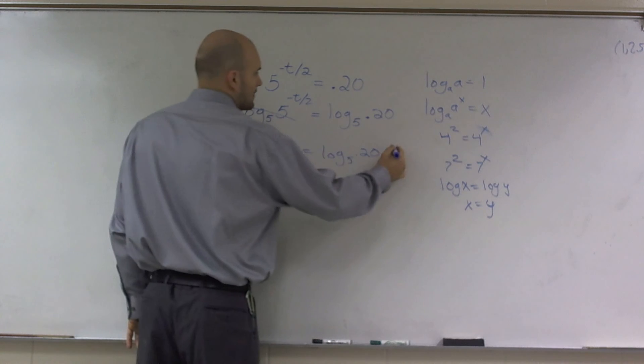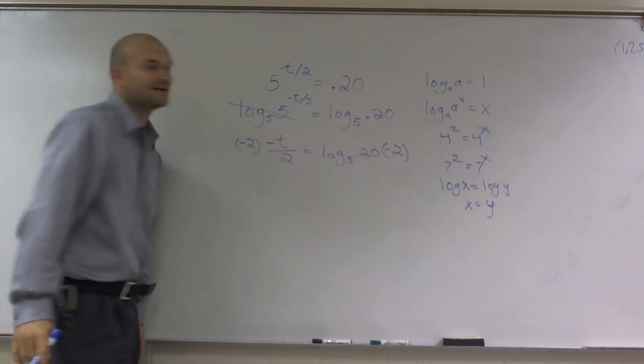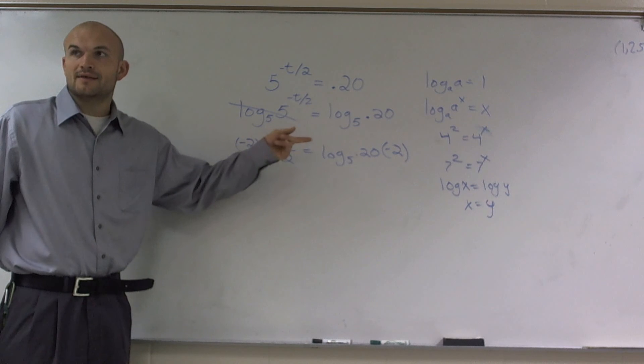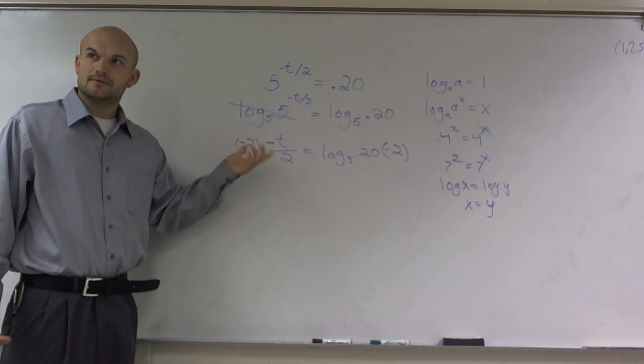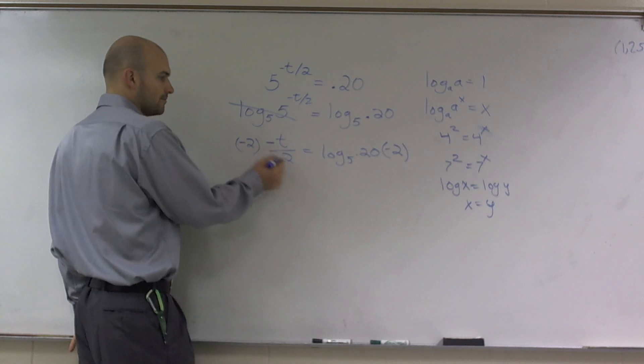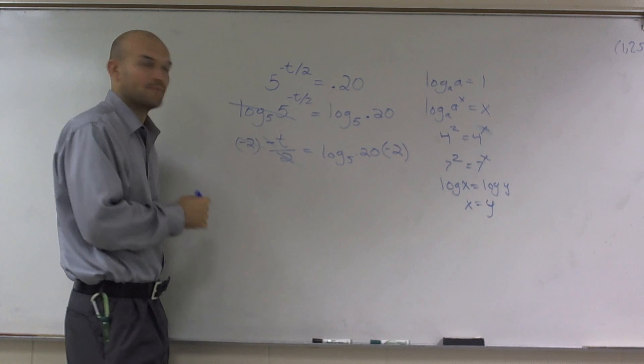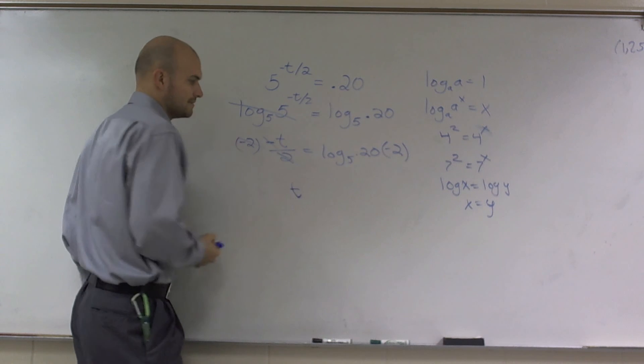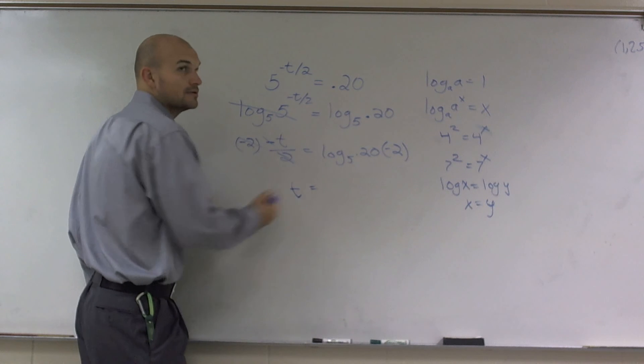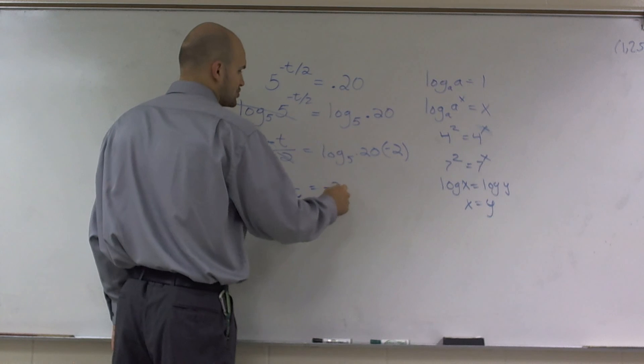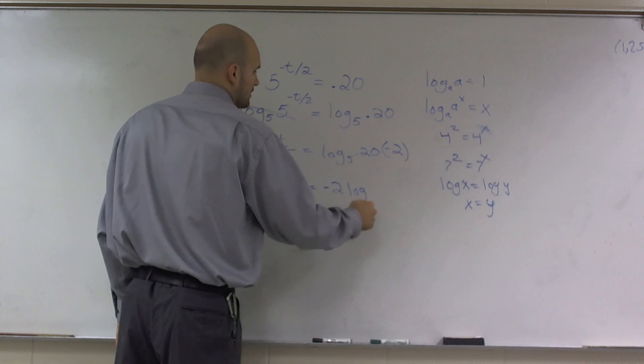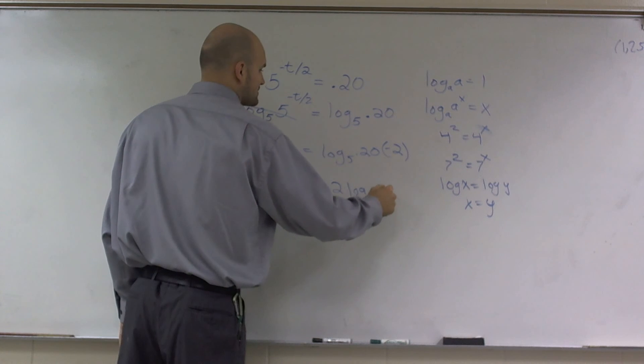Are you going to multiply by negative 2? Yep. I'm going to multiply by negative 2. You can multiply by 2 and then multiply by negative 1. So that's going to be 2t? No. Because now, those are going to cancel out. And my negative and my negative value will make a positive. So there, I'm left with t equals negative 2 times log base 5 of 0.20.